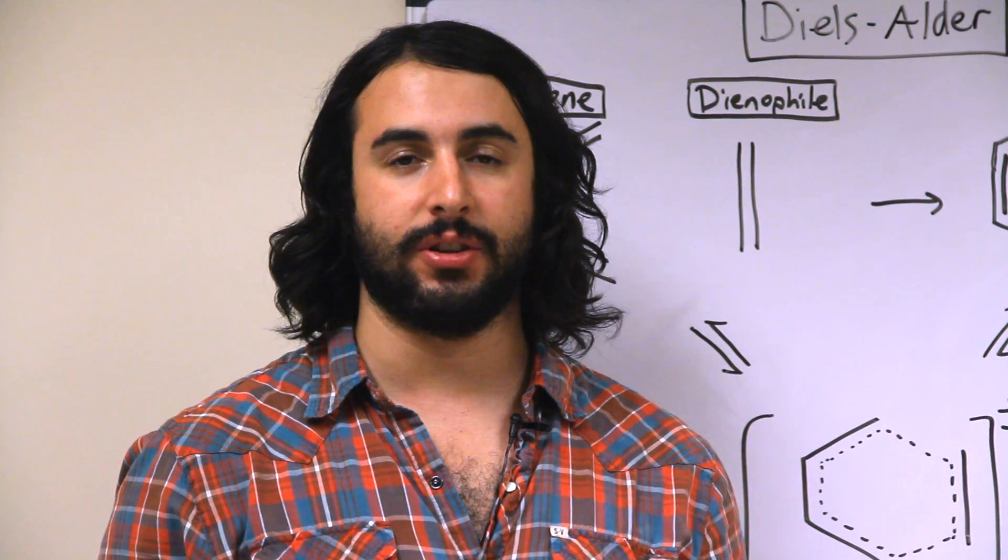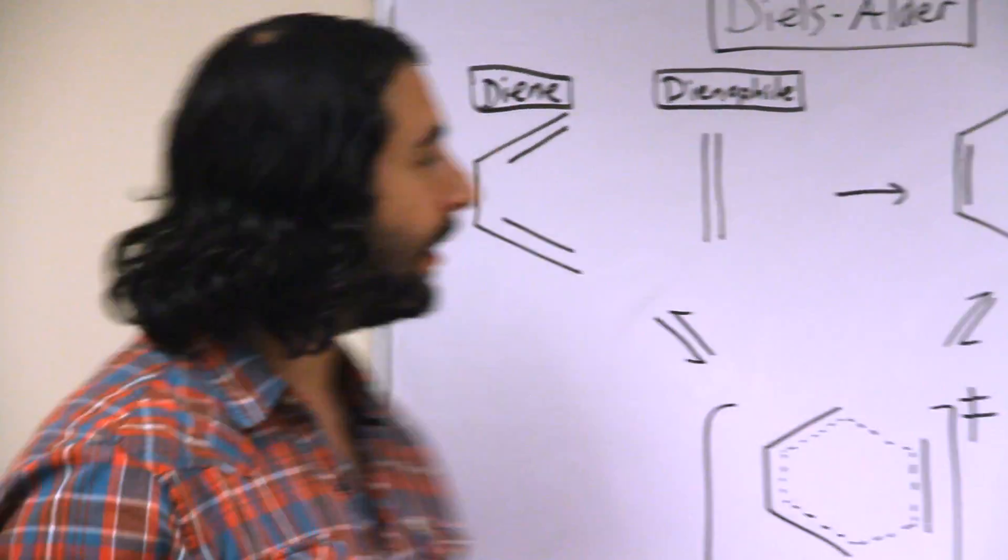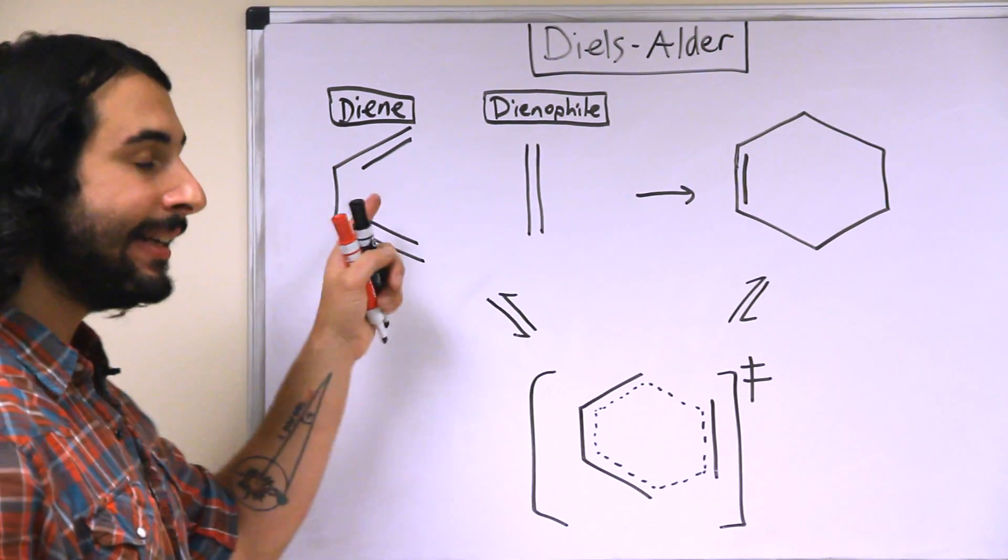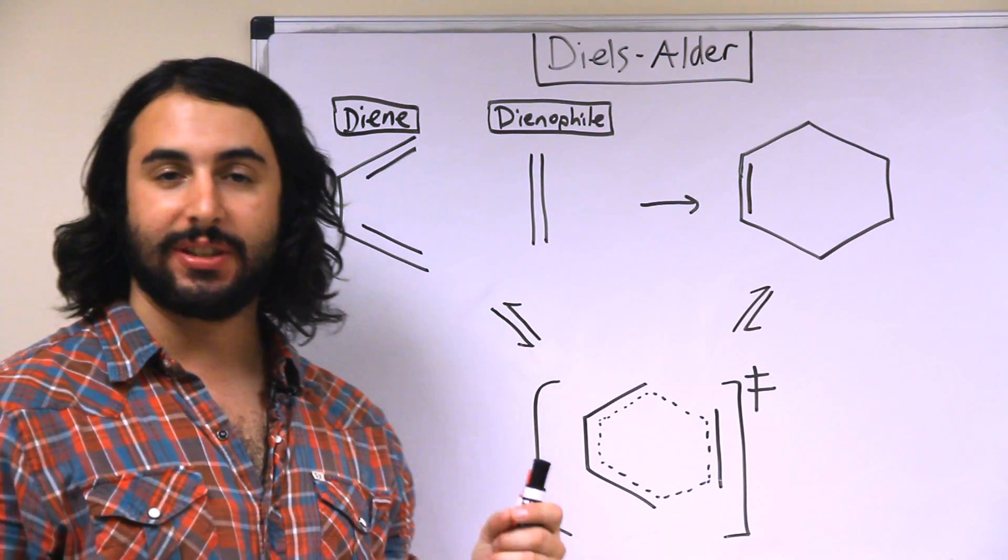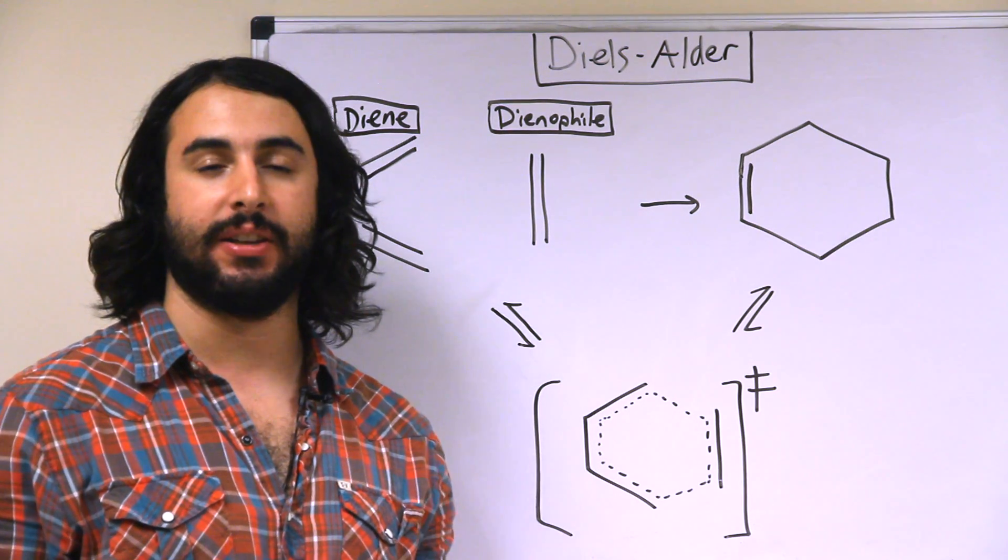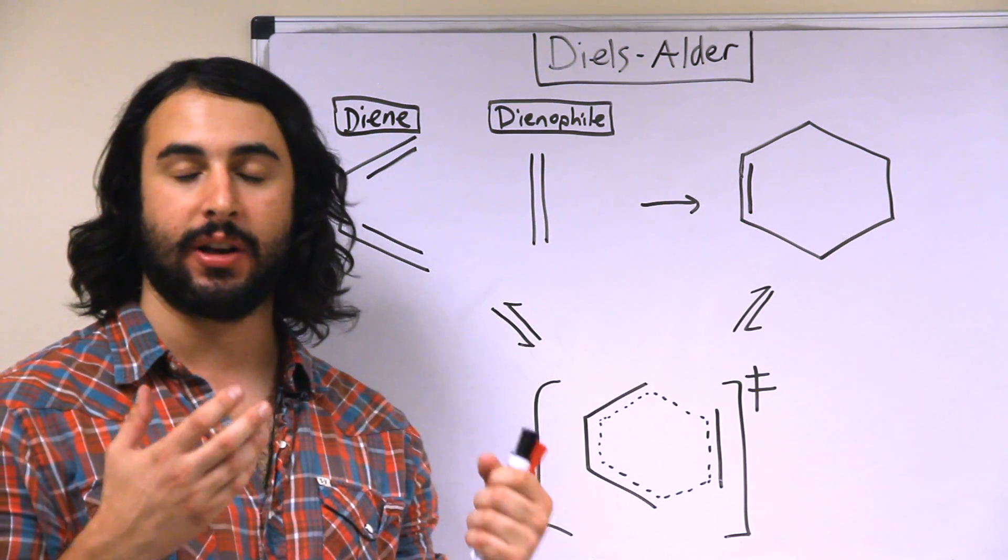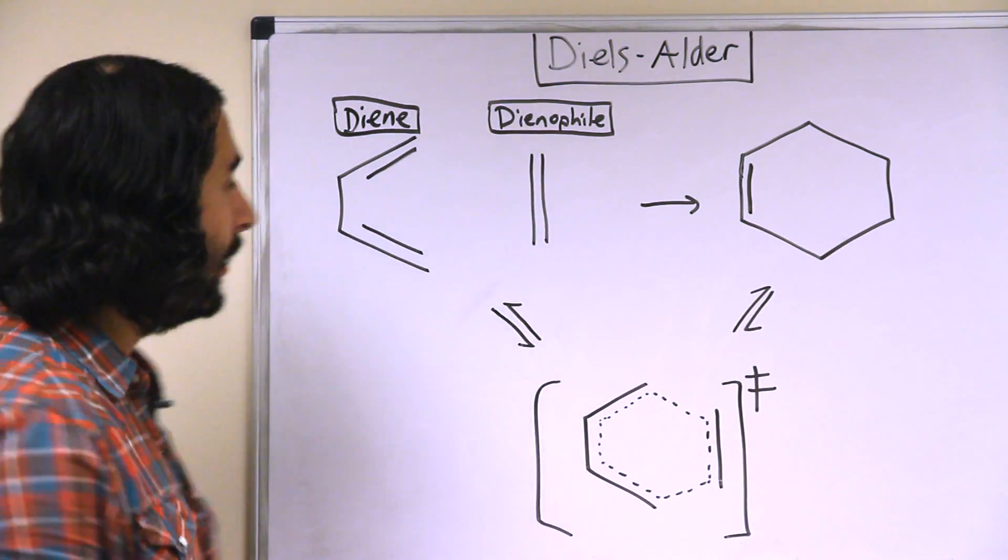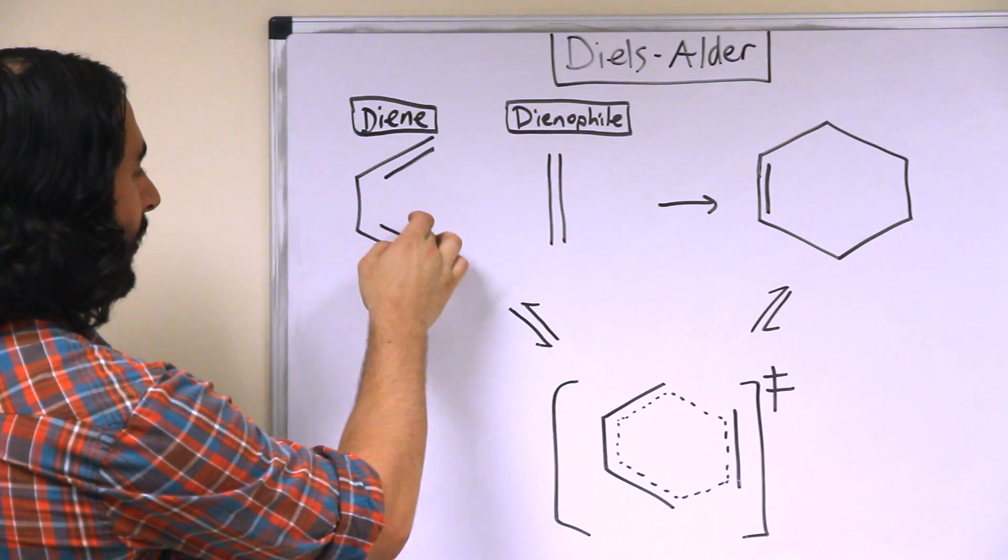So every Diels-Alder reaction is going to have two key players here. There's going to be a diene and a dienophile. So a diene, as you might expect, is an alkene with two pi bonds. So this is the diene, there's a pi bond there and a pi bond there. And the dienophile is the thing that reacts with the diene.